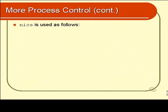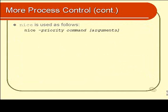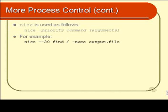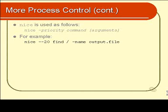NICE is used as follows: you type in the word NICE, then put a minus sign and then the number representing the priority you want, followed by the command and any arguments or options it might have. For example, you might want to run the FIND program at the highest possible priority — negative 20. So you type NICE followed by a minus sign followed by negative 20, giving you two minus signs in a row, followed by the name of the program — in this case FIND — along with all its arguments.